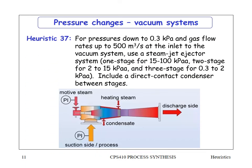For pressures down to 0.3 kPa — about the lowest you'd expect to go — and gas flow rates up to 500 cubic meters per second (about 100 times more than liquid ring vacuum pumps), use a steam jet ejector system. A three-stage system is needed to reach 0.3 kPa; two stages for 2–15 kPa; and one stage for 15–100 kPa absolute. A direct-contact condenser between stages sprays water to condense the steam. A diagram of a three-stage ejector system will be shown on the next page.